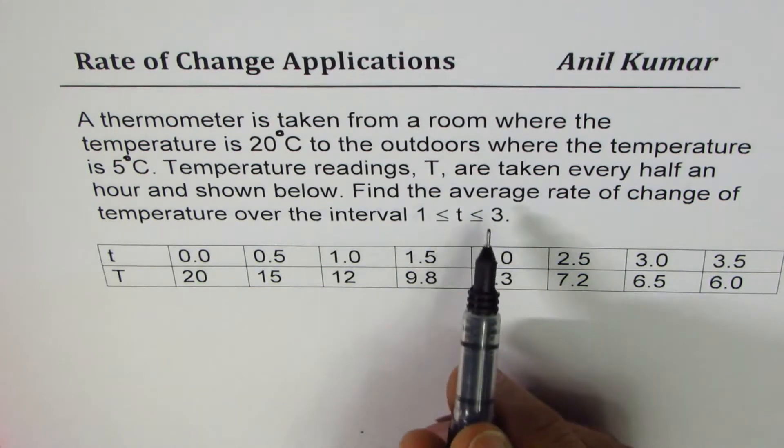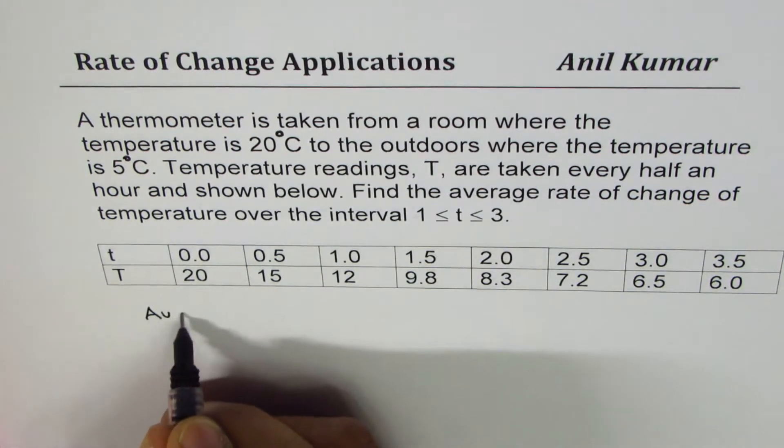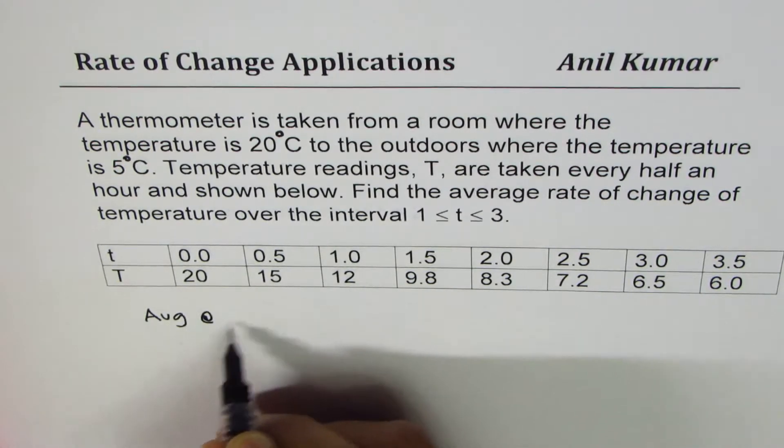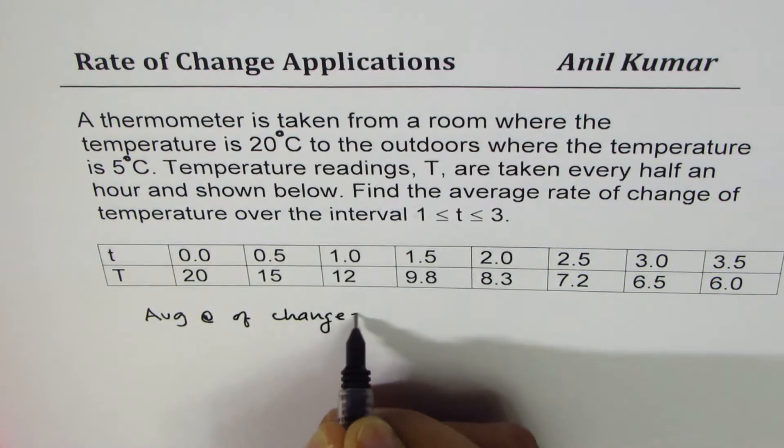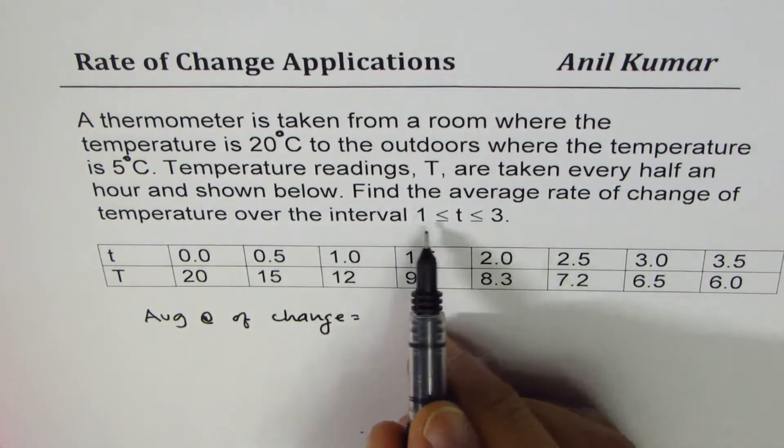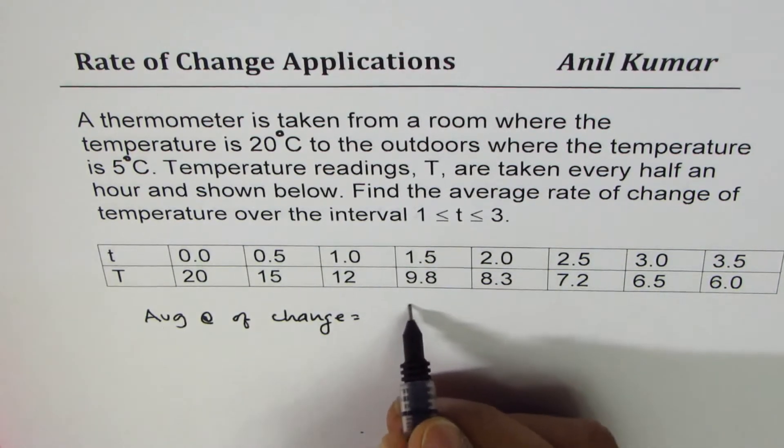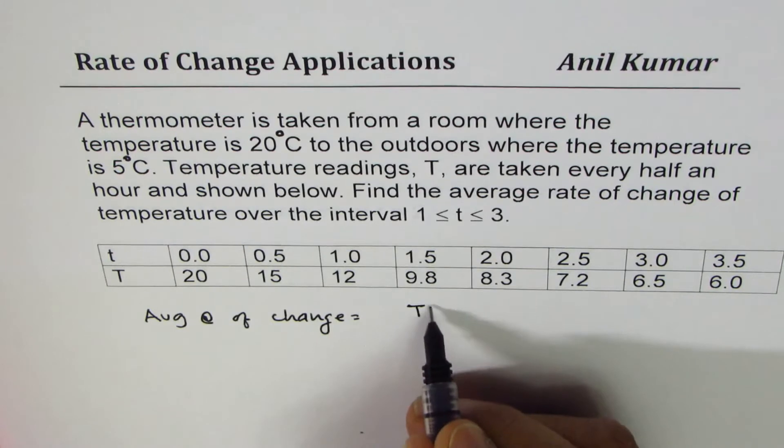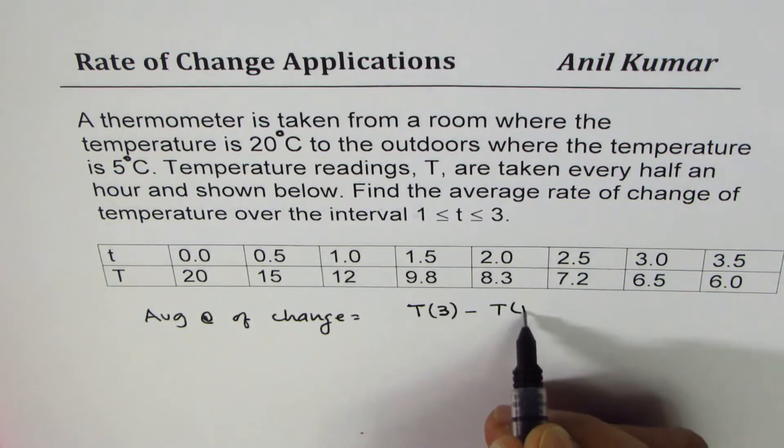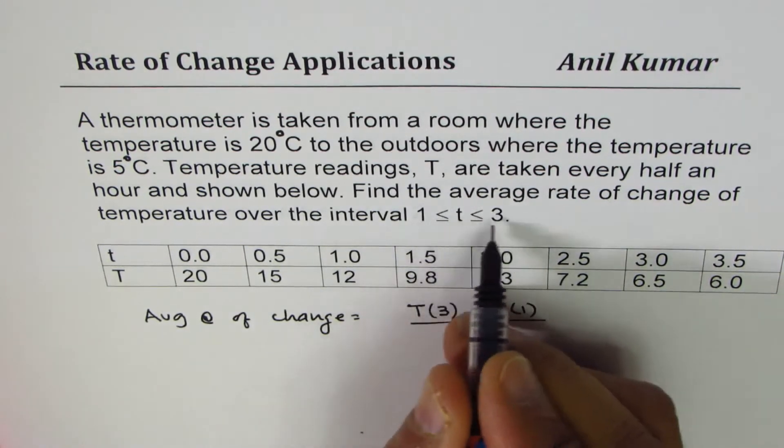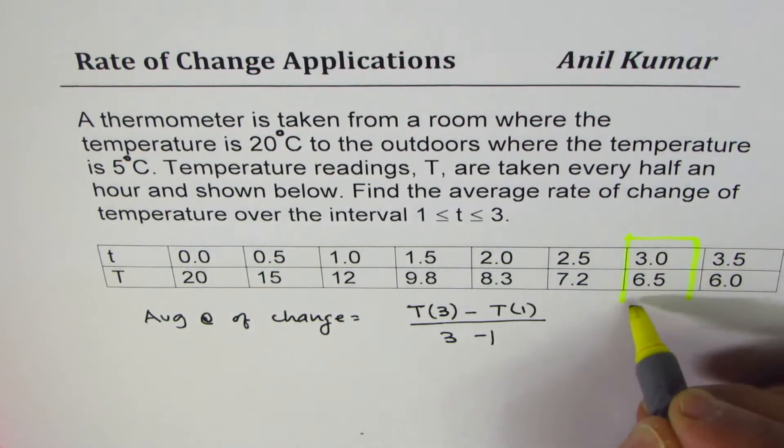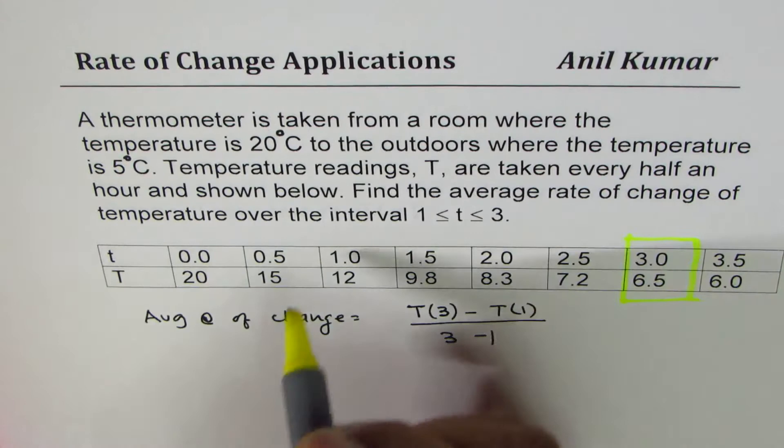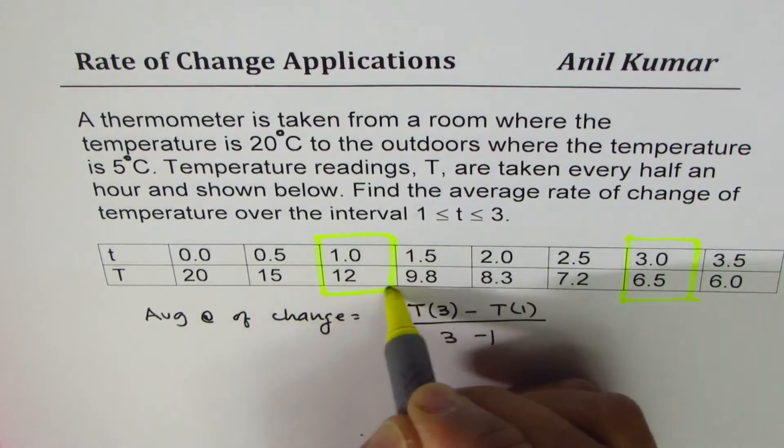When we see average rate of change, we are only talking about two values. The formula will be difference of temperature - temperature at 3 minus temperature at 1, divided by 3 minus 1. From the table you can always read the values. The idea is how to read the values from the table and then do the needful as asked.